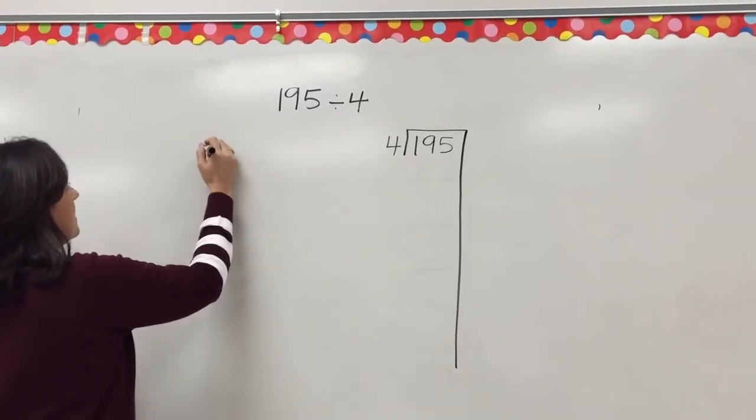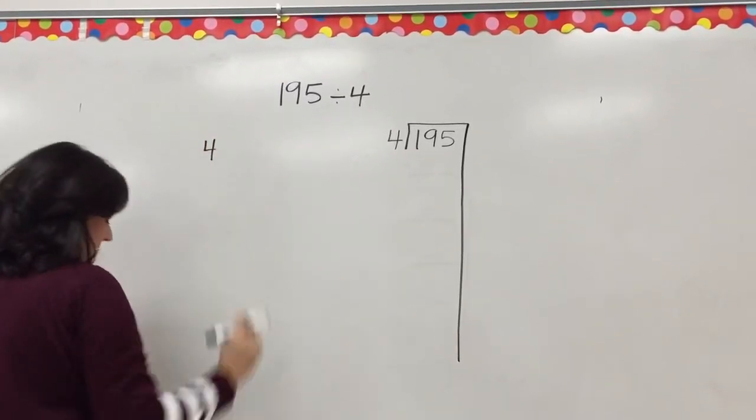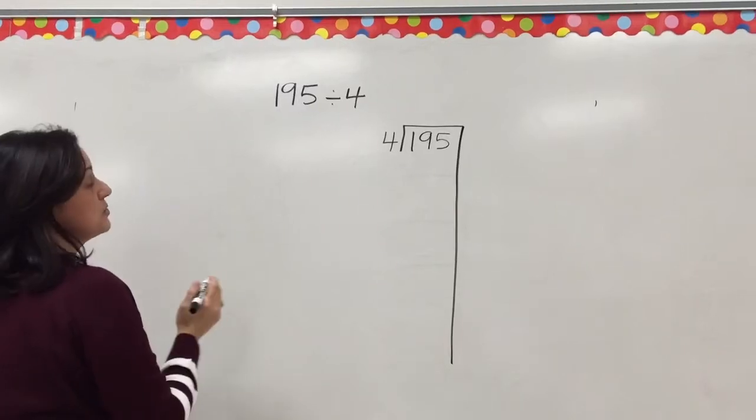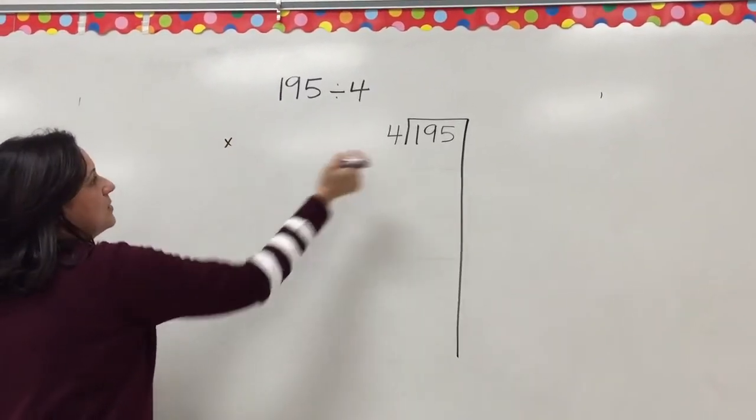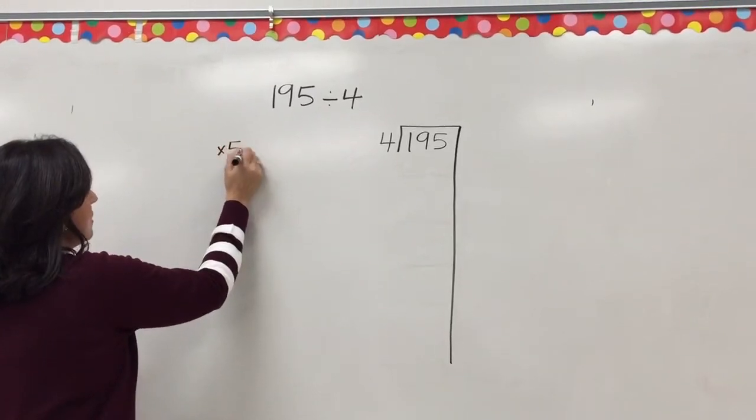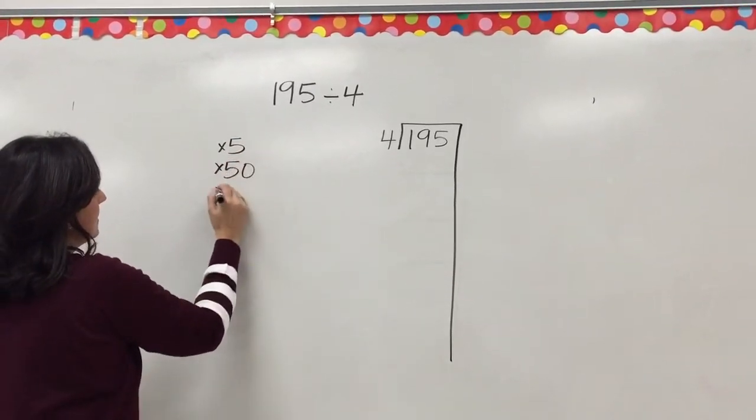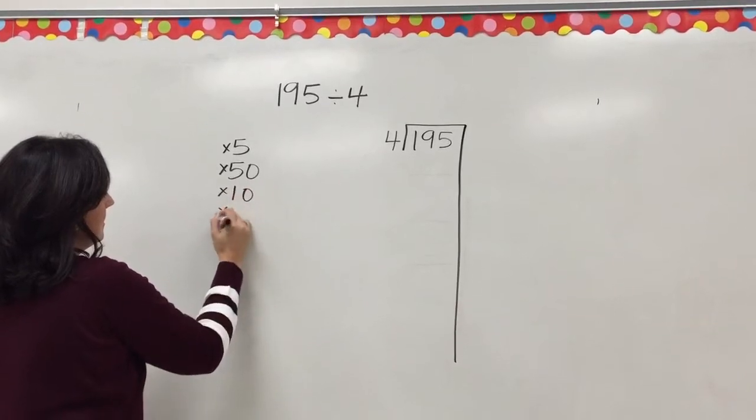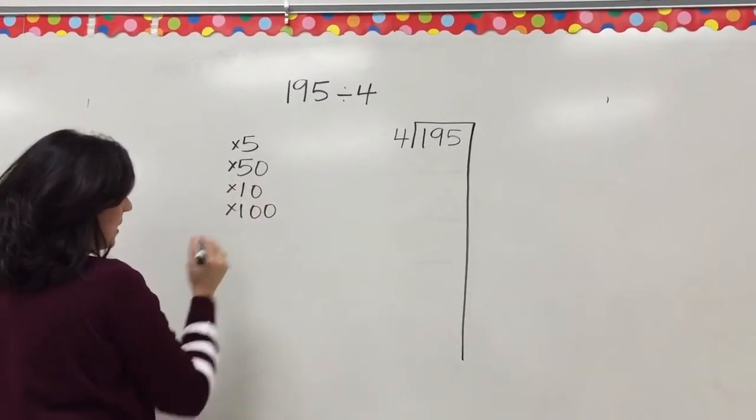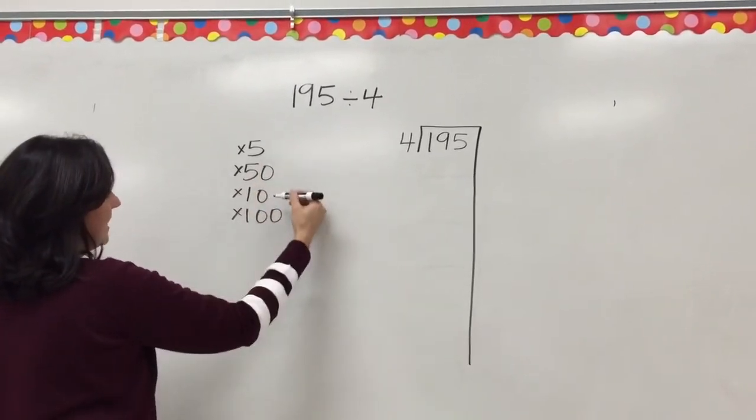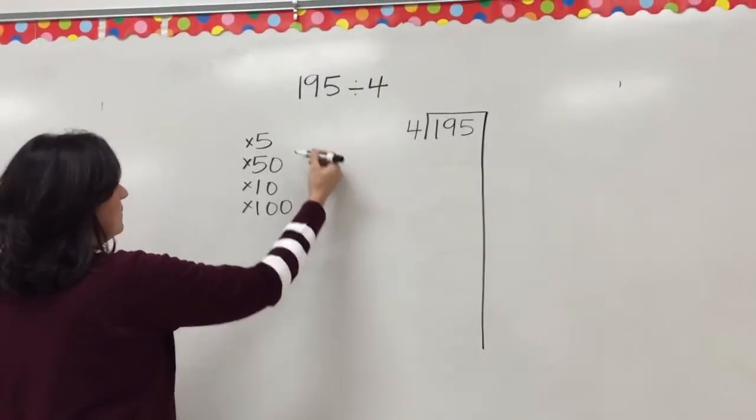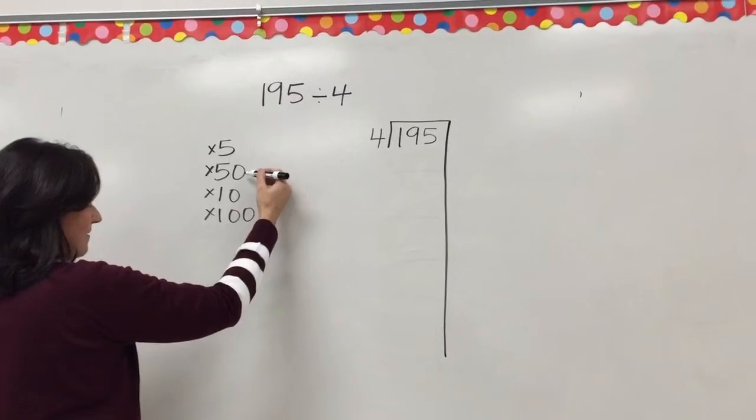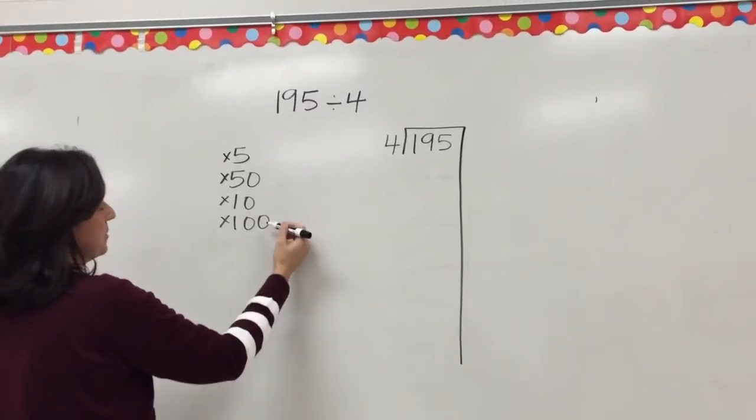So the first step that we've been taught is to start with a benchmark list. The benchmark list is going to help us get as close as we can to these numbers. So we have been taught to choose these benchmarks. I picked 5 and 10 because those are very easy numbers to multiply by. And if you can multiply by 5, you can multiply by 50. If you can multiply by 10, you can multiply by 100.